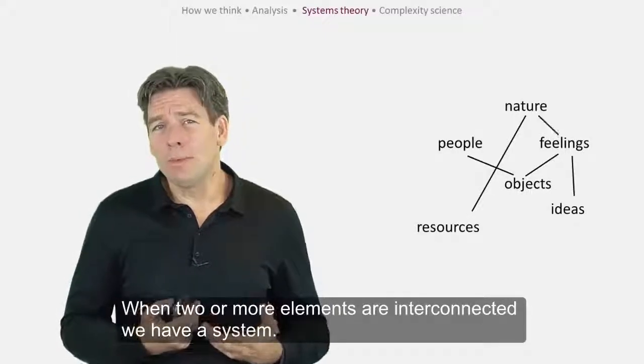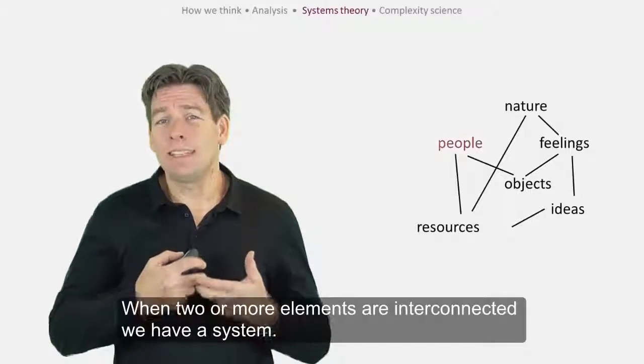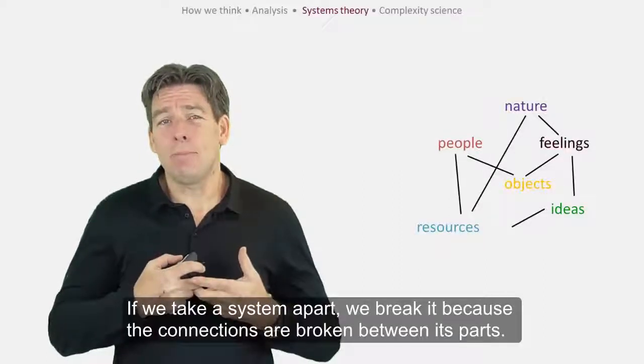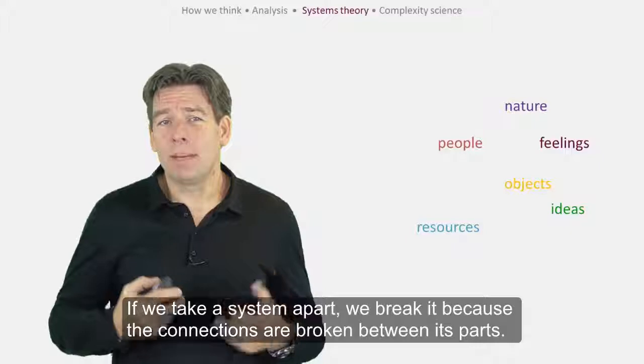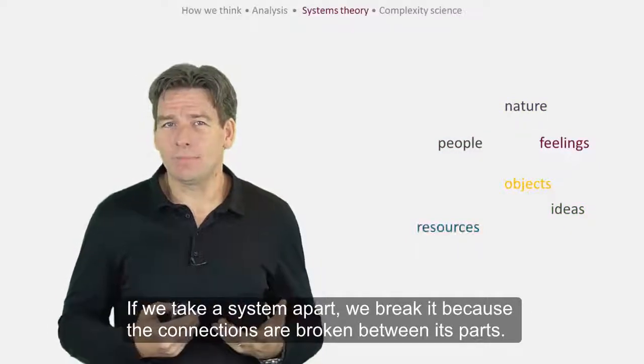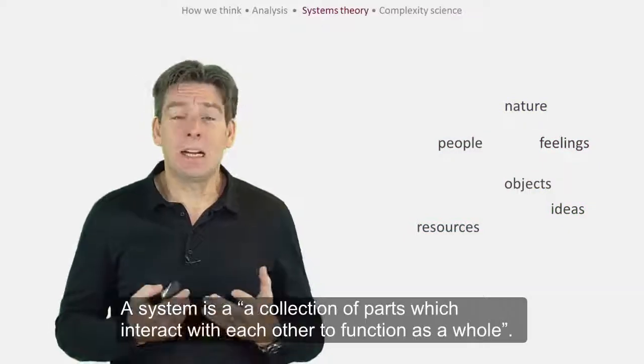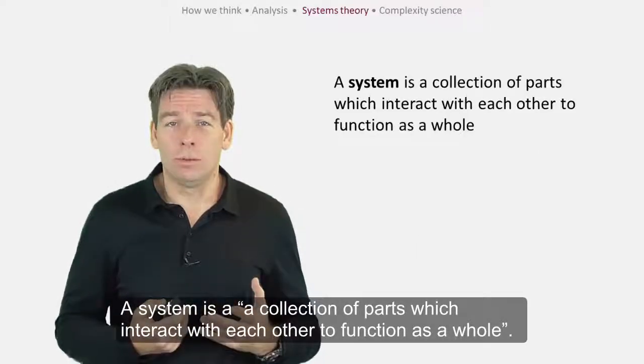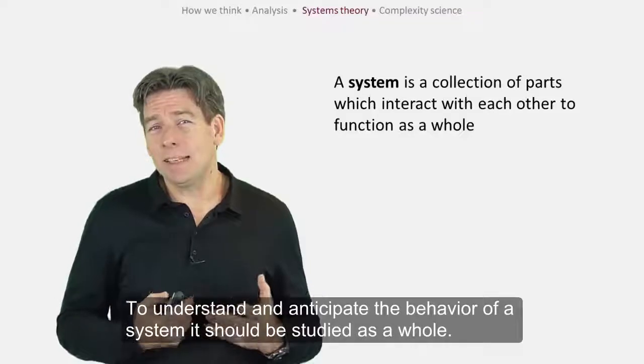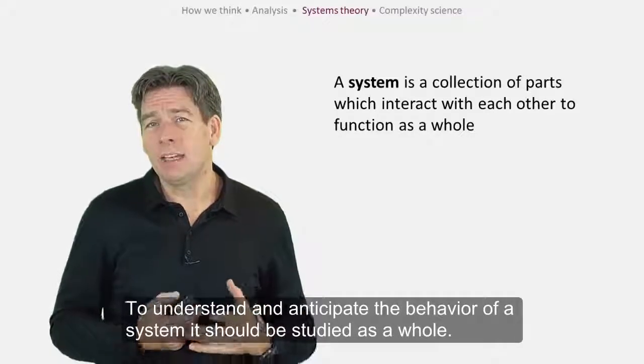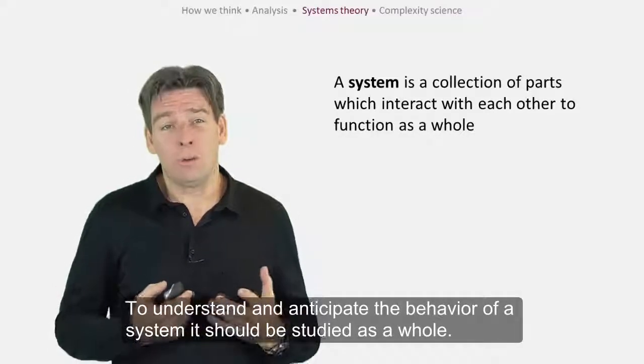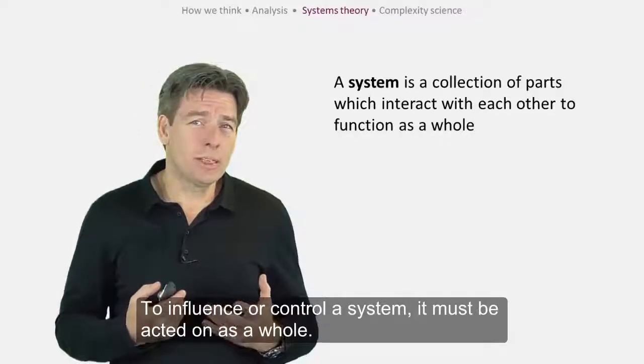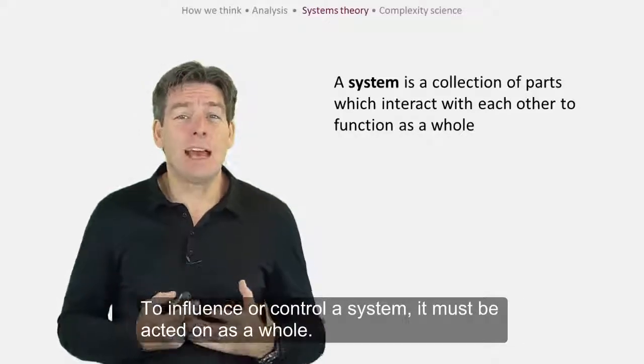When two or more elements are interconnected, we have a system. If we take a system apart, we break it because the connections are broken between its parts. A system is a collection of parts which interact with each other to function as a whole. To understand and anticipate the behaviour of a system, it should be studied as a whole. To influence or control a system, it must be acted on as a whole.